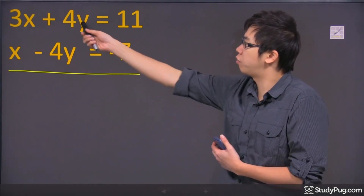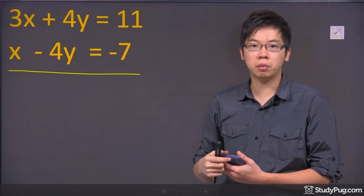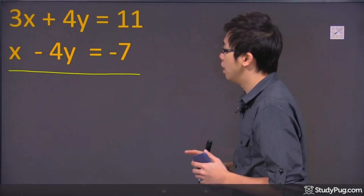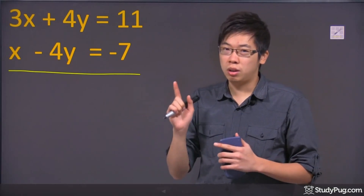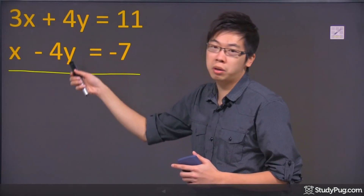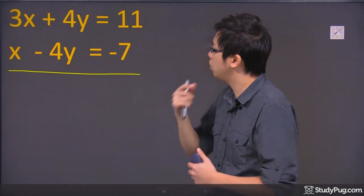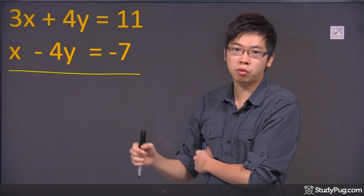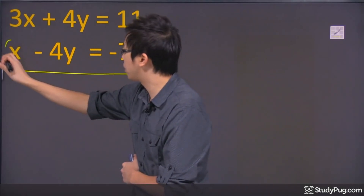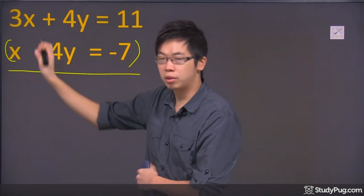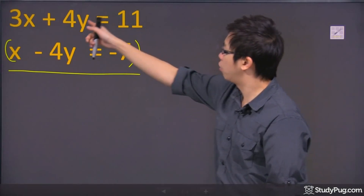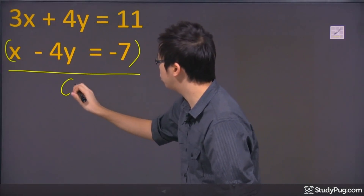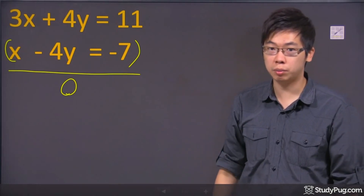It seems like there are four y's on the top and four y's at the bottom — they're already the same. They must be the same for one of the variables. In this case, I'm going to eliminate y first because it's already the same from the question. Now, am I going to add or subtract? It's four y and negative four y down here. If I add these two equations, the four y plus the negative four y becomes zero, and that way you eliminate one of your variables.